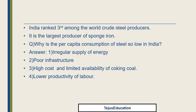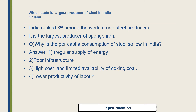Elaborating: irregular energy supply means production of steel is also low. Poor infrastructure means machine usage has to improve — the more machinery used, the more steel is produced. Coking coal availability is low and its price shoots up, making it very expensive. Lower productivity of labor means less production because fewer machines are used.